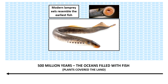Fish gave rise to the animals that eventually moved onto land and became things like amphibians and reptiles, and eventually things like mammals, which survived through ice ages and lived into modern times. So we can see a little bit of our ancestry in this fish. This is a lamprey — lampreys are modern fish you can find in lakes and streams.